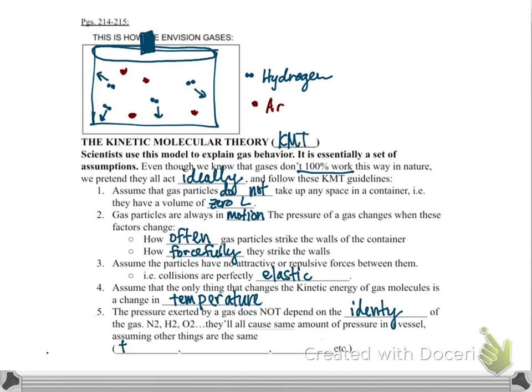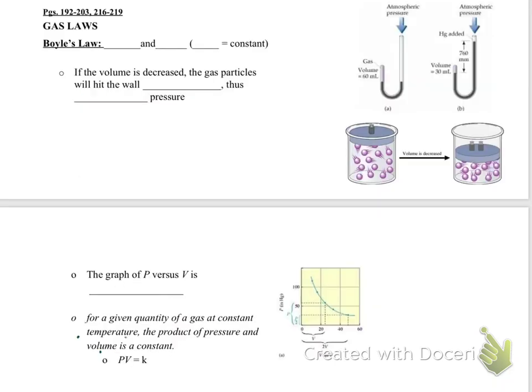There's four molecules of argon bouncing off the walls of the container, four molecules of hydrogen. They're going to both exert equal pressure, assuming that the temperature is not changing, that the number of particles isn't changing. We can treat these exactly the same in terms of the pressure they exert. So let's move forward and continue talking about assumptions with gases.